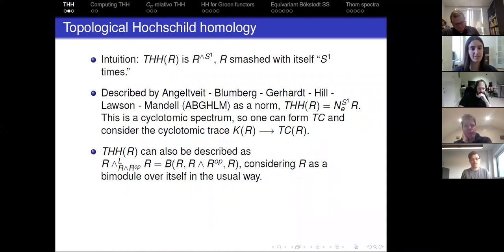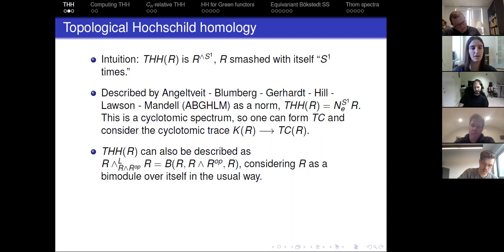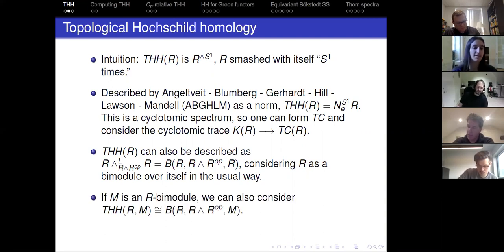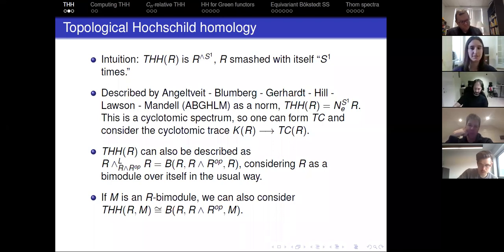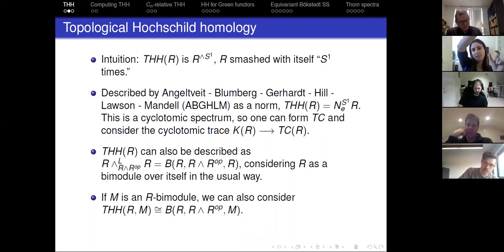Another way to think of THH is as a derived smash product. You can do the derived smash product of R with itself over R smash R-op, computed with a bar construction, where R is considered as a bimodule over itself. You can also consider THH with coefficients in an R-bimodule M, doing the derived smash product of R with M over R smash R-op. In the cyclic bar construction, instead of R in the first place, you have M, and when you rotate things around, you act with R on M. This will be helpful in thinking about CN relative THH.